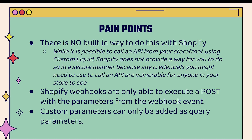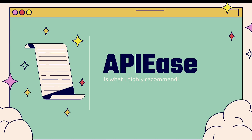Shopify webhooks are only able to execute a POST with parameters from the webhook event, and we need to set these up correctly. Custom parameters can only be added as query parameters. This is a little technical, definitely for people who understand how and why to use APIs, but this is by far the best way to do it. If you want to implement this strategy, you're going to be using APIease — this is what I highly recommend. You can see the link directly below this video.